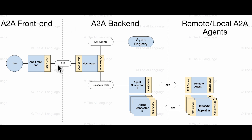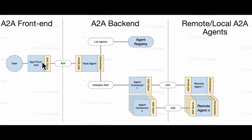How does the A2A client connect to your A2A server? This is what we call the A2A backend — it receives the query from the client through the A2A protocol. The server exposes all the endpoints that the A2A protocol requires, which includes the well-known agent.json endpoint, the send task endpoint, and other A2A endpoints. For this app, the A2A client is going to connect specifically to a host agent.